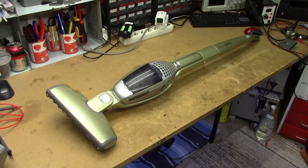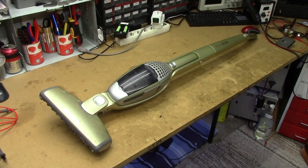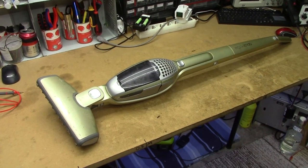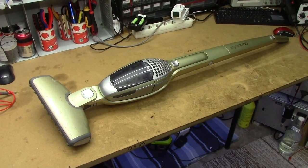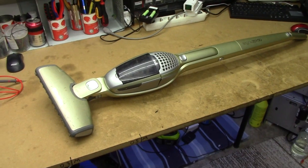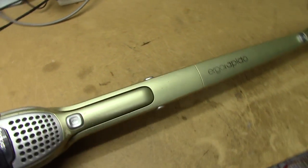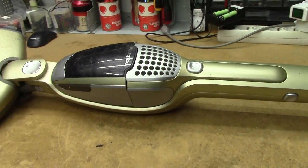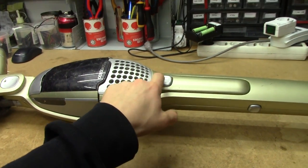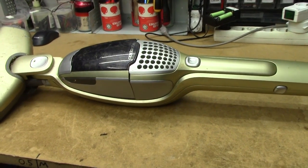This is an Electrolux Ergo Rapido non-lithium, which I picked up at the same time as the Ergo Rapido lithium that we looked at in a previous video. Unlike the lithium, I'm pretty sure this one's just old and has dead batteries because I did get it to fire up briefly for a moment and then it just instantly shut off.